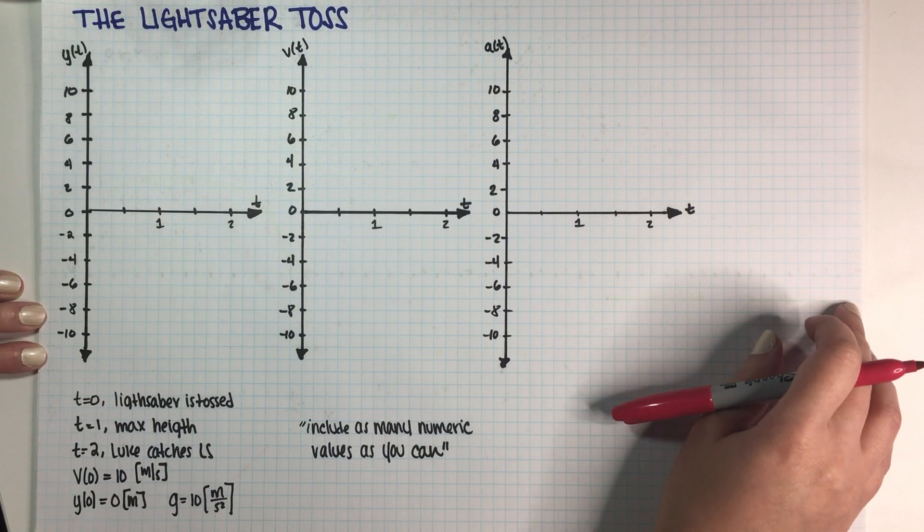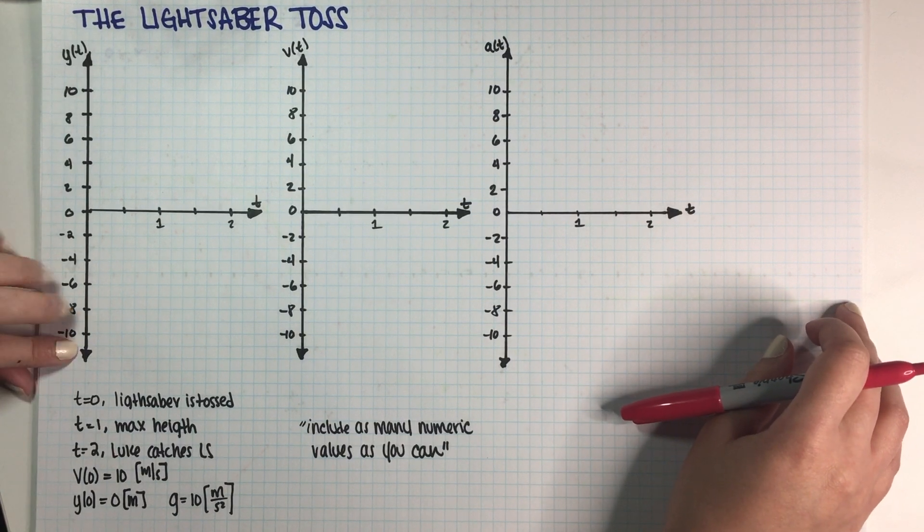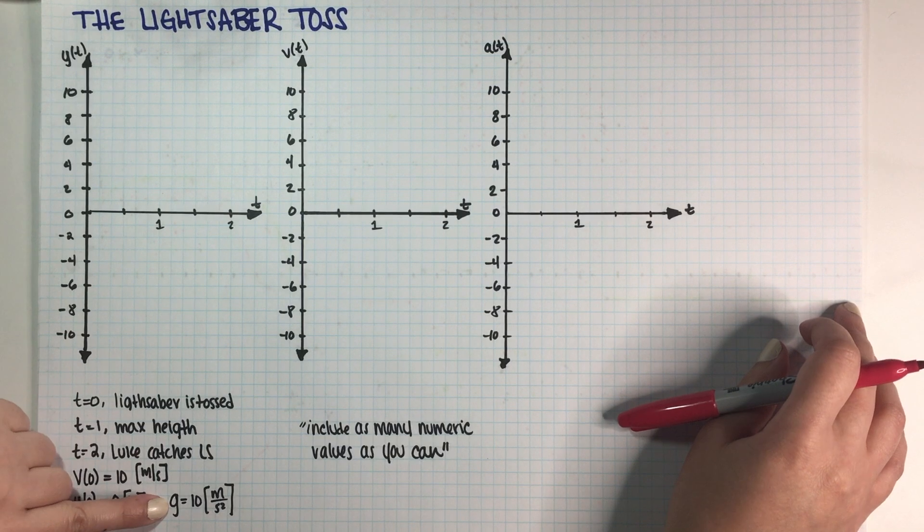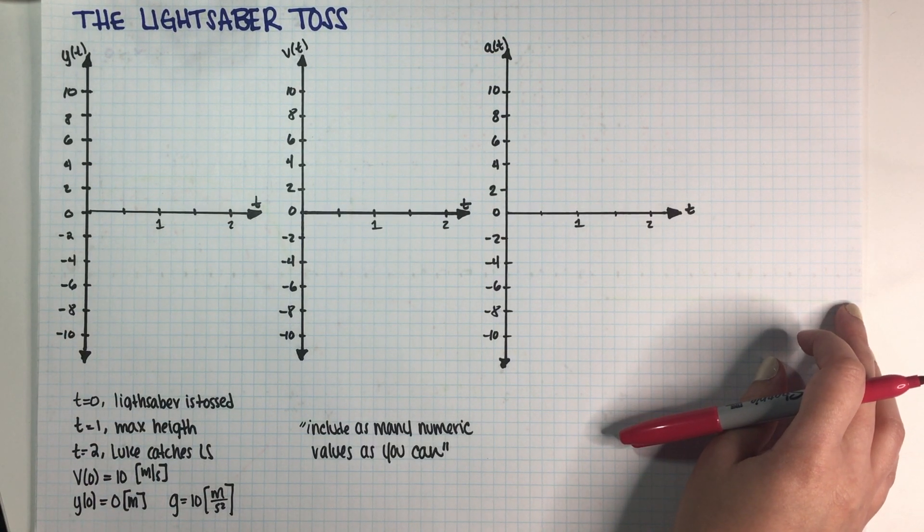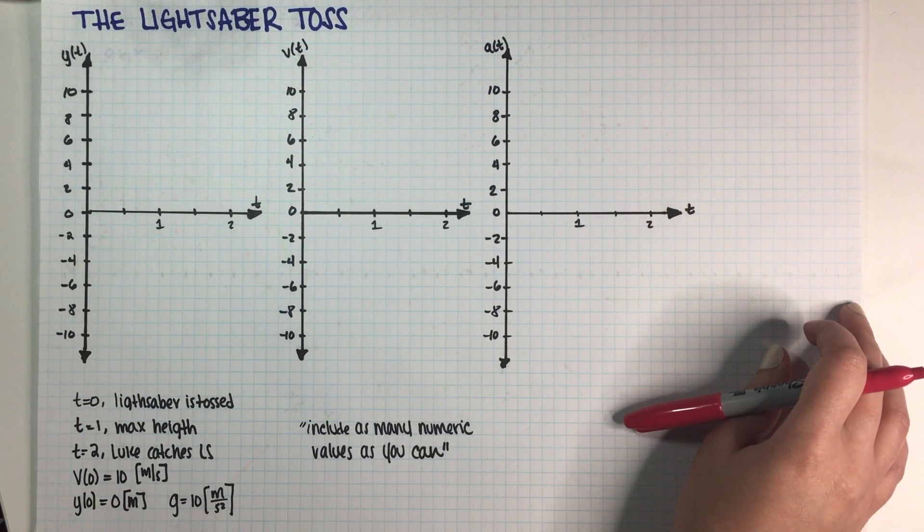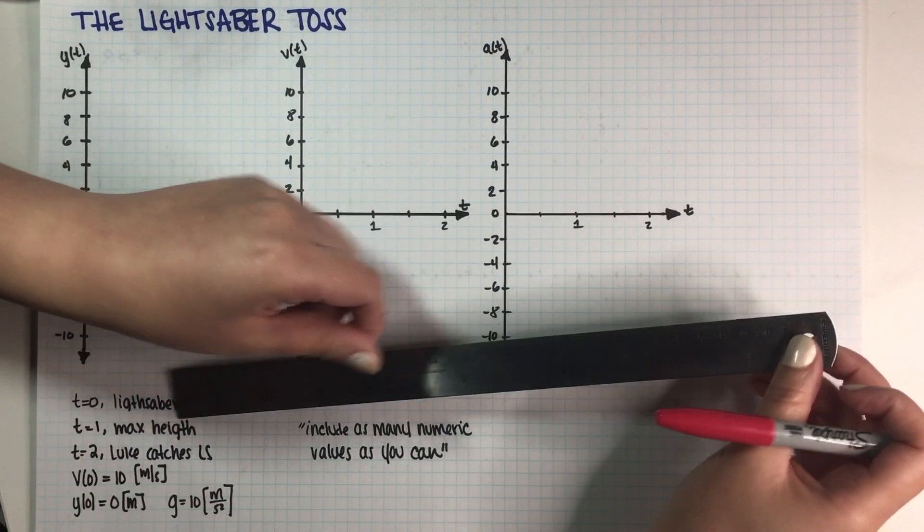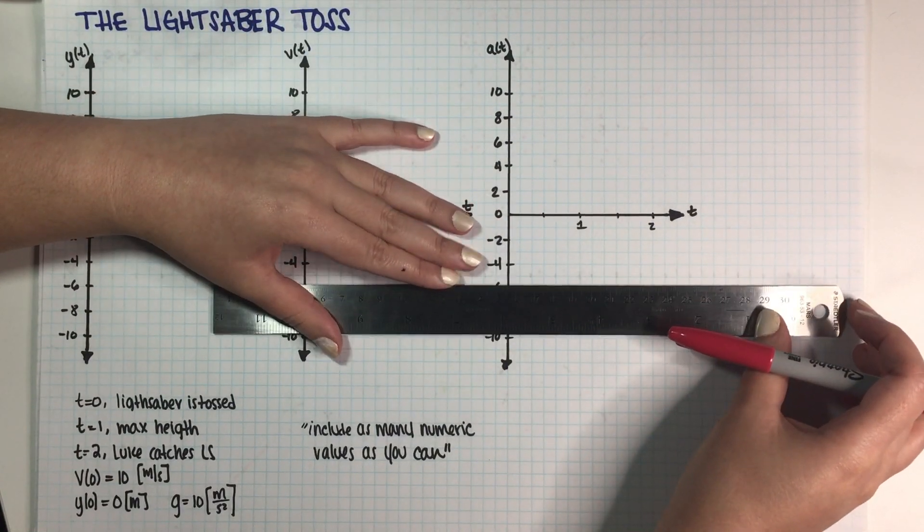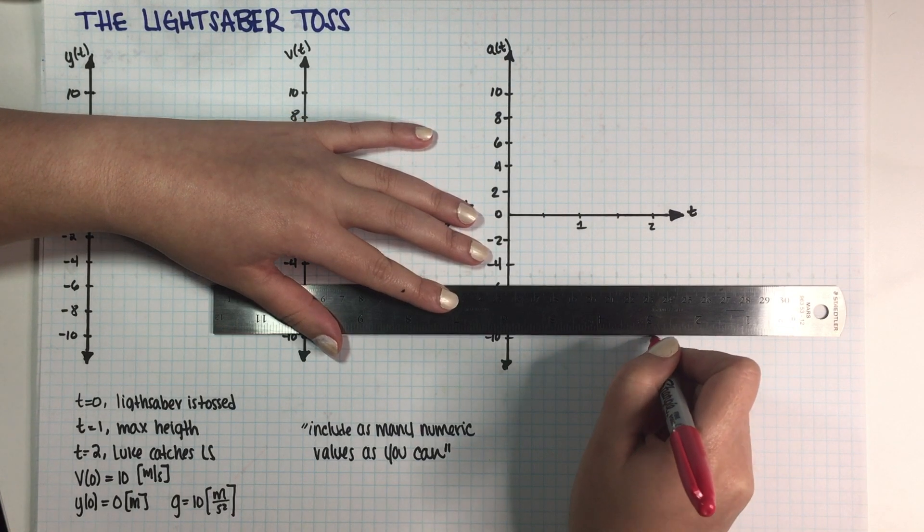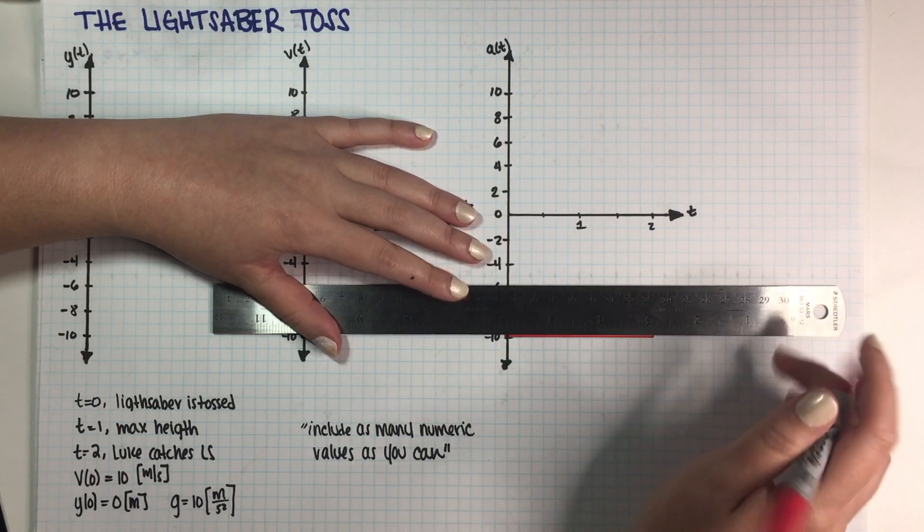So acceleration in this case is just gonna be gravity, because the net force that the lightsaber is feeling is the force of gravity. So because net force is equal to mass times acceleration, that just means that our acceleration for this entire problem is gonna be negative 10. So I'm just gonna go ahead and grab that. There we go.